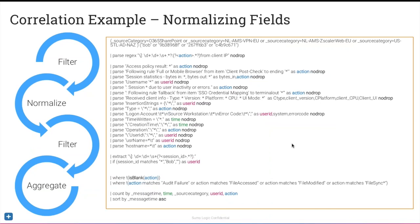Here's the magic query. Following the correlation flow — filter, normalize, filter, aggregate: first we specified source categories we cared about: SharePoint, VPN, Zscaler, and Active Directory. Then keywords: the user ID name 'bob,' plus the VPN session IDs — because the VPN logs tracked sessions by session ID rather than username in every log, so we did a quick query for Bob, found the session IDs, and packed them into the keyword to tightly limit our data set.